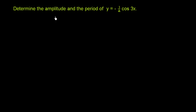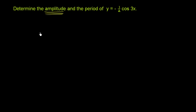We're asked to determine the amplitude and the period of y equals negative 1 half cosine of 3x. The first thing we have to ask ourselves is what does amplitude even refer to? Well, the amplitude of a periodic function is just half the difference between the minimum and maximum values it takes on.